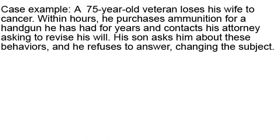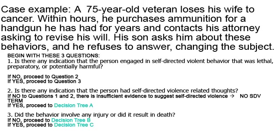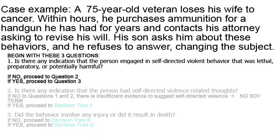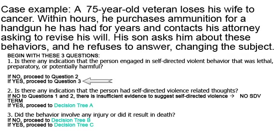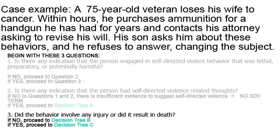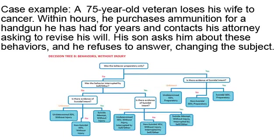Here's a third example. A 75-year-old veteran loses his wife to cancer. Within hours, he purchases ammunition for a handgun he has had for years and contacts his attorney asking him to revise his will. His son asks him about these behaviors and he refuses to answer, changing the subject. Starting with the three questions: is there any indication that the person engaged in self-directed violence, either preparatory or potentially harmful? Yes — he engaged in preparatory behavior by purchasing ammunition for his gun and contacting his attorney to revise his will. Did the behavior cause any injury? No, so we proceed to decision tree B.